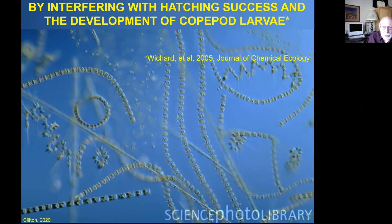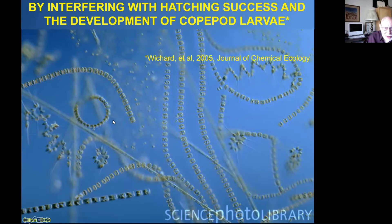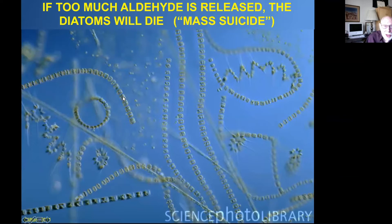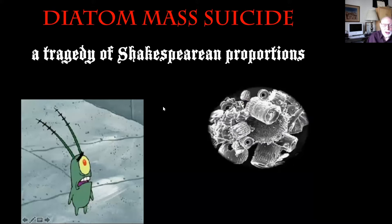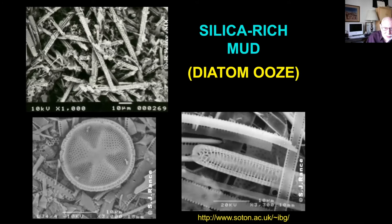And if too much aldehyde is released, it kills the diatoms off in what's been called a mass diatom suicide — surely a tragedy of Shakespearean proportions. But diatoms do die and settle to the bottom, forming something that scientists call diatom ooze. Off Antarctica, Wikipedia estimates the diatom ooze can be up to a half mile thick.